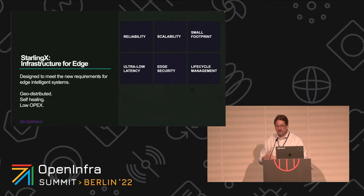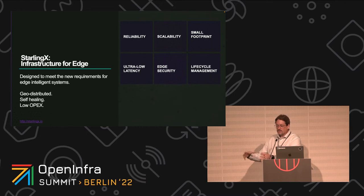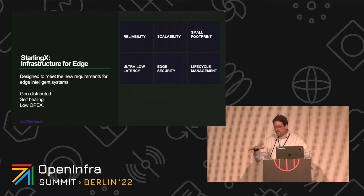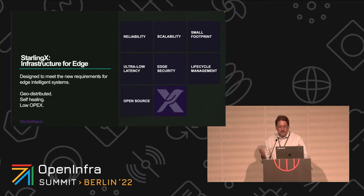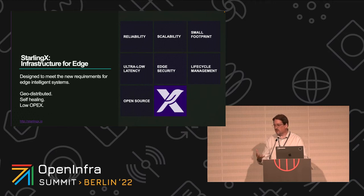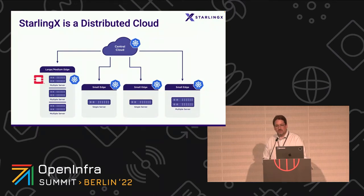StarlingX provides the ability from a centralized dashboard to do patches and upgrades dynamically. You can select subsets of what we call sub-clouds — the remote clouds — and upgrade just them or all of them, in parallel or sequentially. There's a rich feature set within StarlingX to handle lifecycle management of the infrastructure, though not application lifecycle management — that's more an orchestrator function. And of course, being founded at the Open Infrastructure Foundation, we really felt that doing this as open source with community involvement was essential.